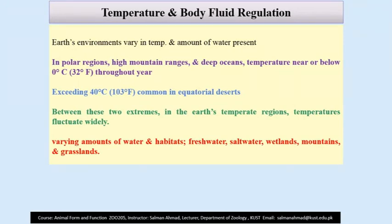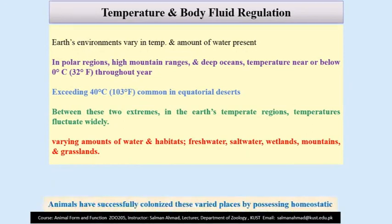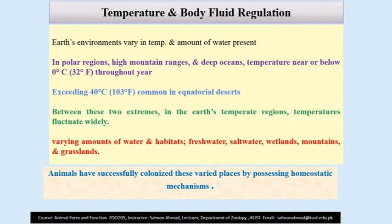Varying amounts of water and habitats. There are a number of habitats present on earth based on the varying amount of water available, such as freshwater habitats, saltwater, wetlands, mountains, grassland, and desert habitats. Animals have successfully colonized these varied places by possessing homeostatic mechanisms.